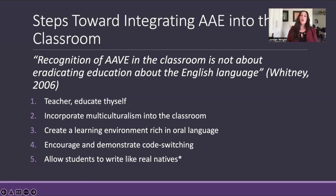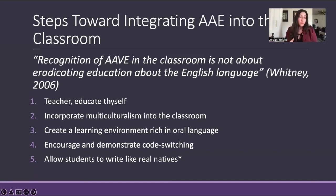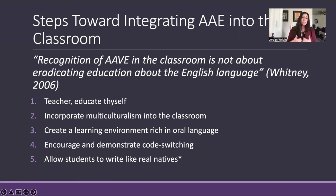Number four: encourage and demonstrate code-switching. This facilitates discussions with students about different linguistic styles and the appropriateness of each one, diving into pragmatics — what does this look like in their native language? Students should understand that cultural context influences everything they encounter. If they're studying in the United States, they must understand the historical and cultural nuances of the country, and this includes AAE, which will help them understand American cultural context.